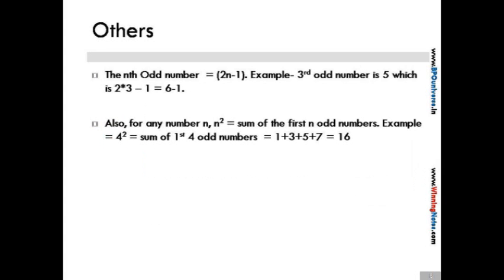On next slide, we will see how you can get to the nth odd number. Now an nth odd number is given as 2n - 1. So a third odd number is 5. We can get to this number as 2 × n - 1, which is 2 × 3 - 1, which is 6 - 1. Also, for any number n, n^2 is the sum of the first n odd numbers. For example, for 4 as n, 4^2 which is 16 is the sum of the first 4 odd numbers.